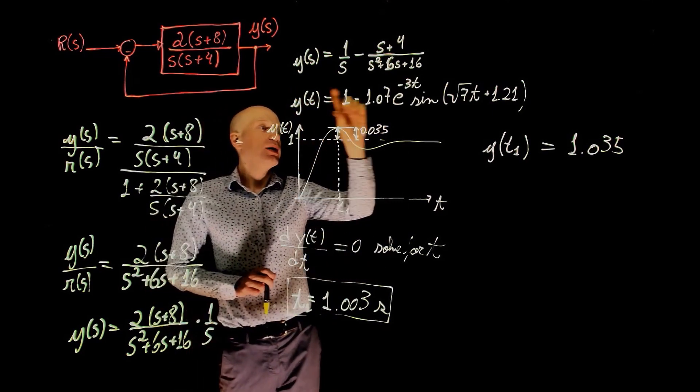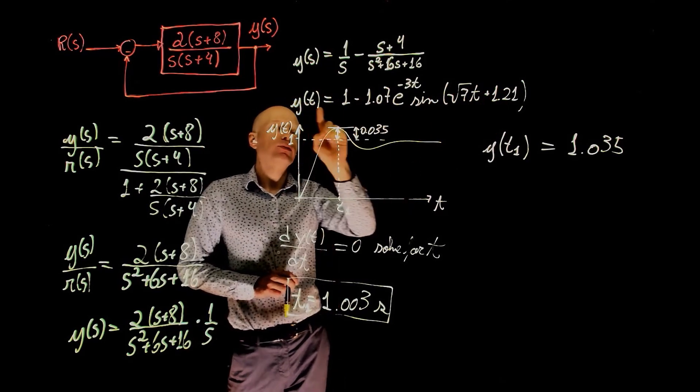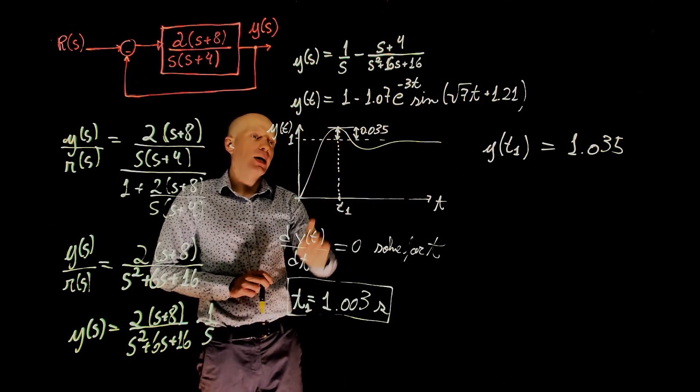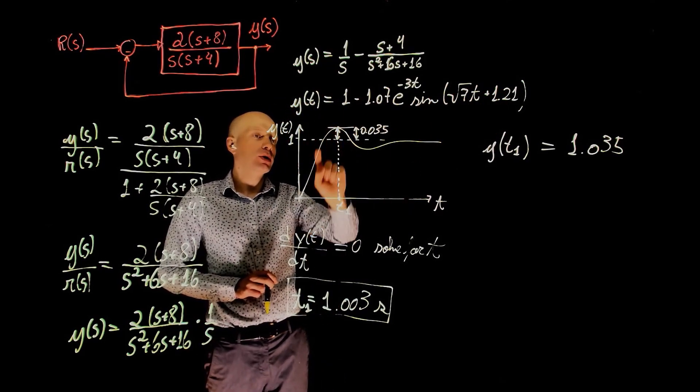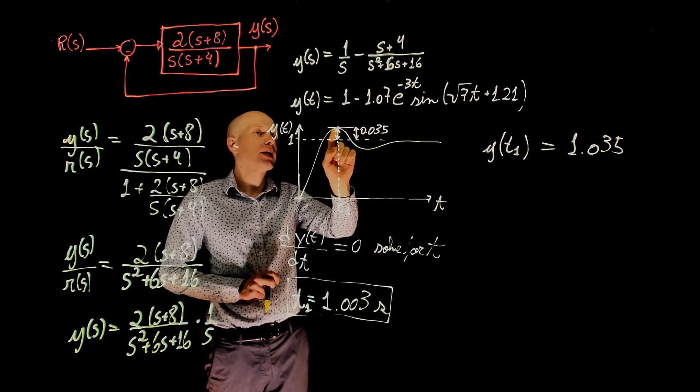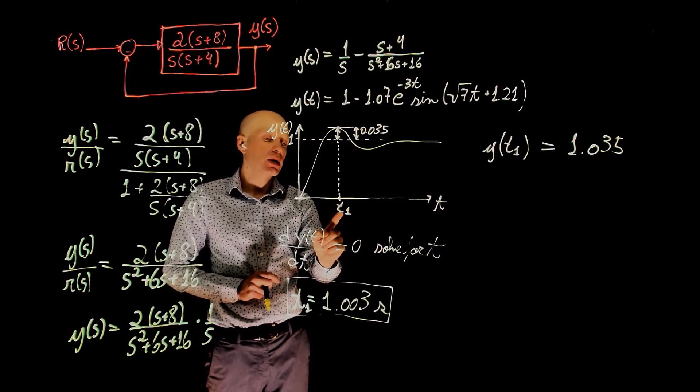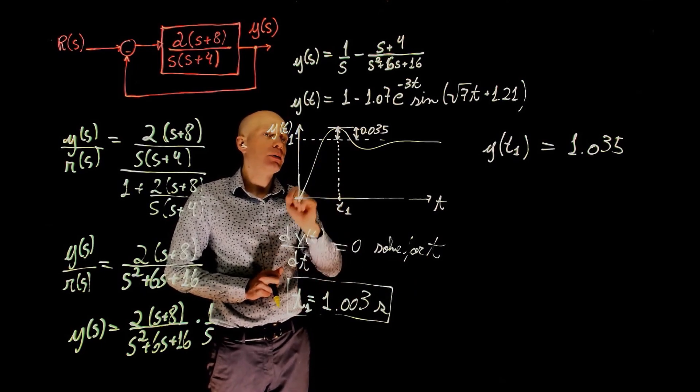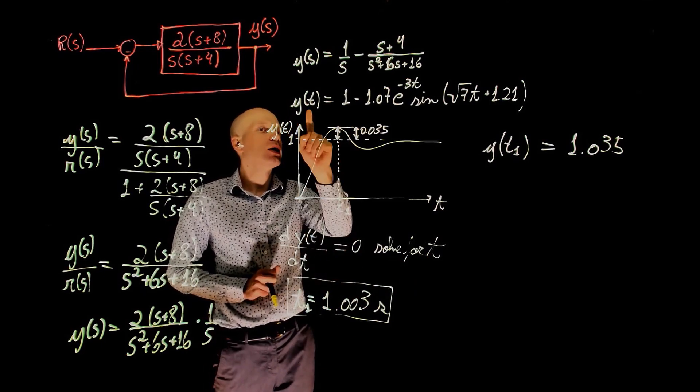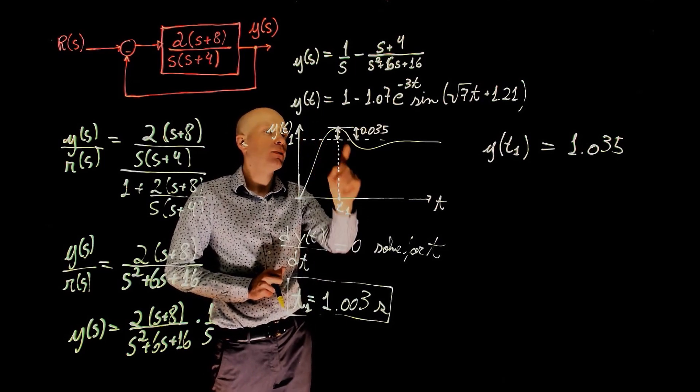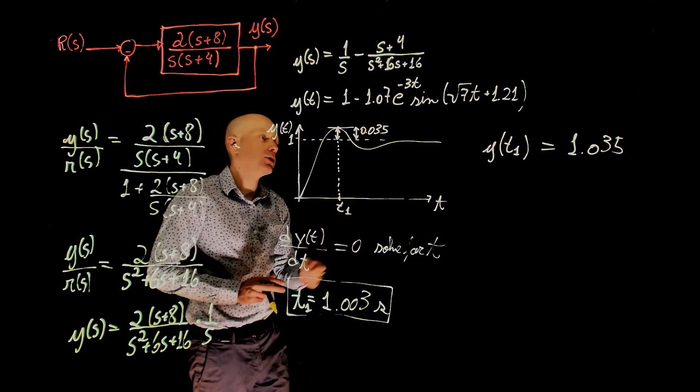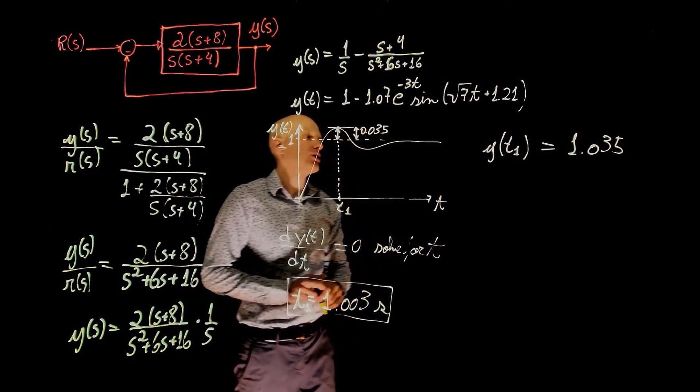Again, we take the temporal response here, find the derivative with respect to time that gives us the slope. We know that the slope, when the function reaches its maximum, is 0. So equating that to 0 and solving for t gives us the time when that peak occurs. Now, evaluate y of t at t1 to find the value of the function at t1, and that is 1.035.